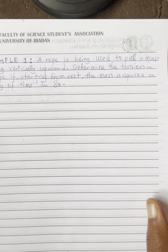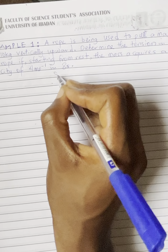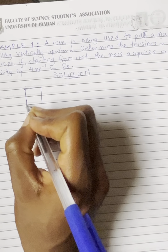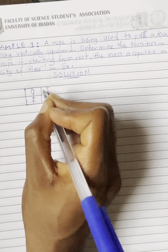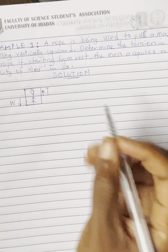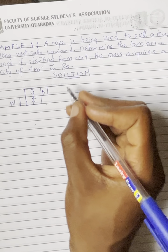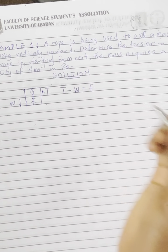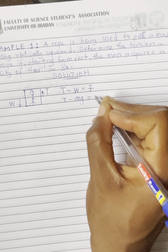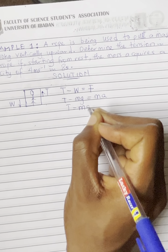Now let's consider an example. A rope is used to pull a mass of 10 kg vertically upward. Determine the tension in the rope if, starting from rest, the mass acquires a velocity of 4 meters per second in 8 seconds. Since the body is moving vertically upward, the tension is greater than the weight, so: T minus mg equals ma, which gives T equals ma plus mg.